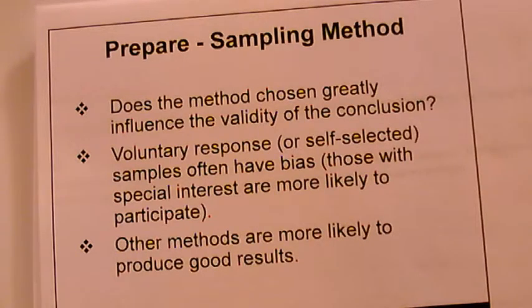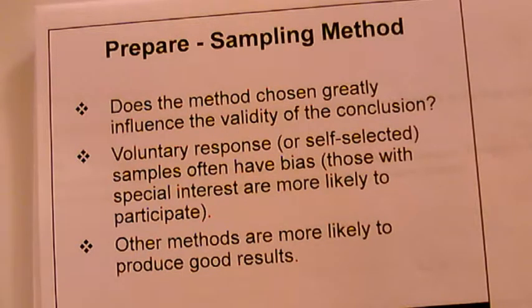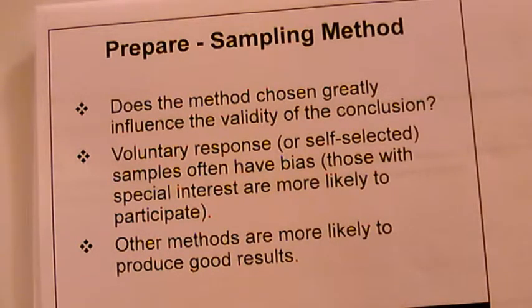A voluntary sample consists of individuals who have chosen to participate — who volunteered, not who were chosen. Voluntary response samples do not give you a good conclusion because that conclusion would not be a good representation of the entire population. So avoid voluntary samples and consider other methods more likely to produce good results. We'll talk about other sampling methods in the first chapter.